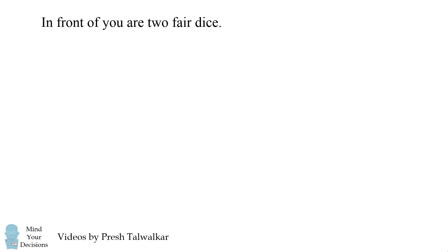In front of you are two fair dice. One is a seven-sided dice with faces numbered negative 3, negative 2, negative 1, 0, 1, 2, and 3.